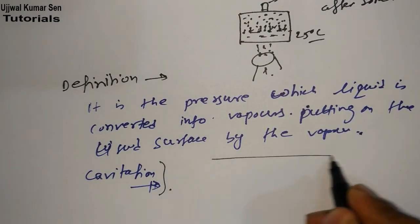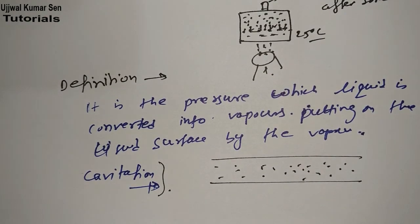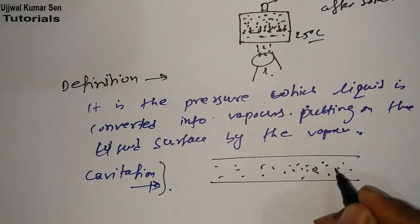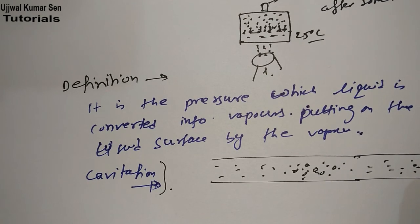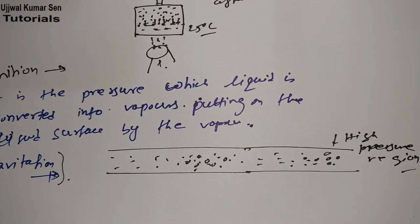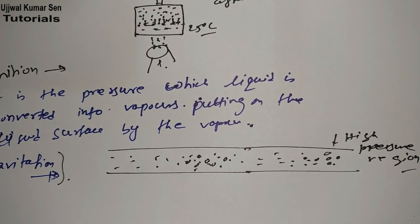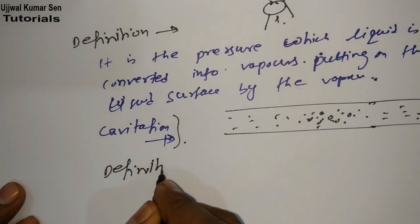So what is happening in the case of cavitation? Suppose we have a pipe, and inside the pipe, because of vapor pressure, there is formation of bubbles. Whenever the liquid with these bubbles enters a high pressure region, the bubbles will collapse, and because of that pitting and cavitation occur on the pipe. This phenomenon is known as cavitation.